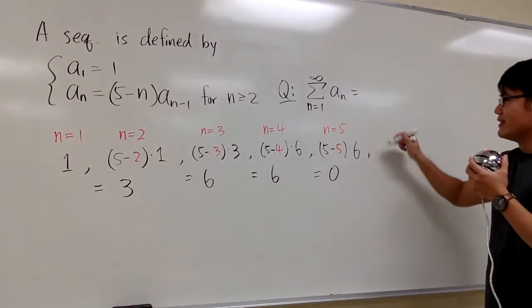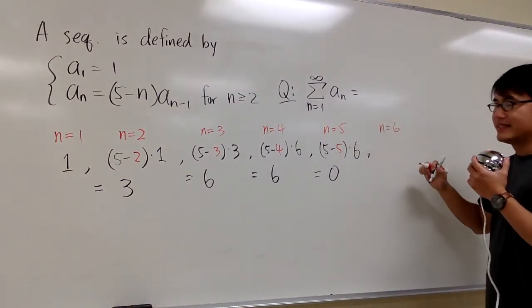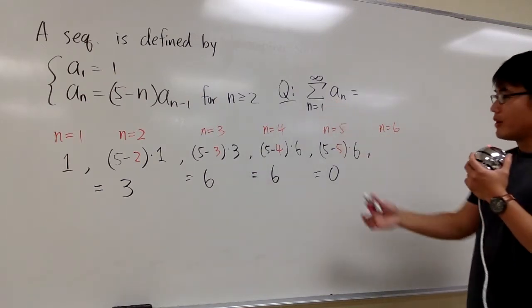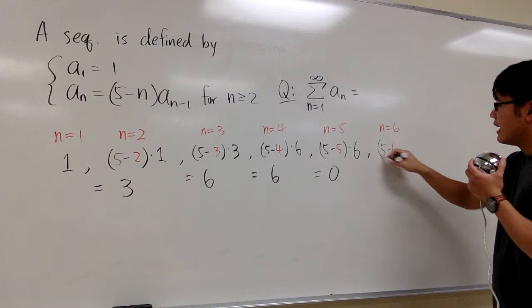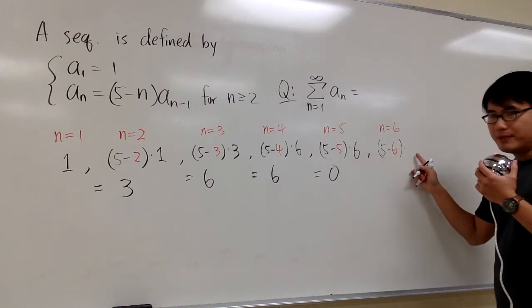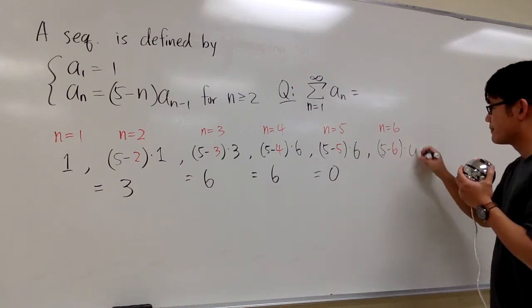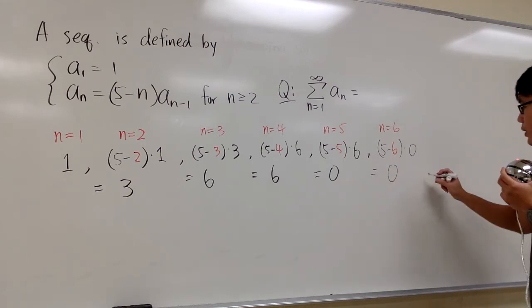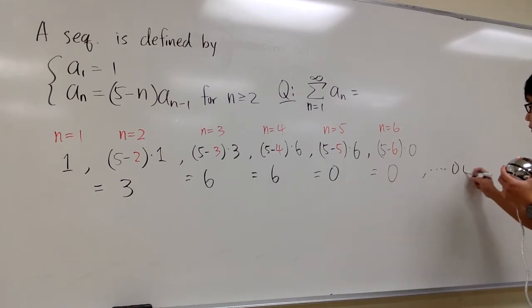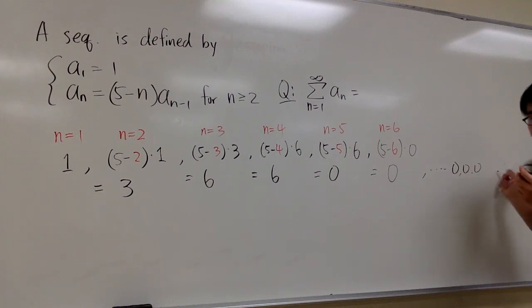And what will happen next, though, if n is equal to 6? Well, we follow the same formula, but then you will end up with 5 minus 6, and then times the previous term, which is 0. And of course, we'll just end up with 0. In other words, we'll be getting lots of 0s after that, right?